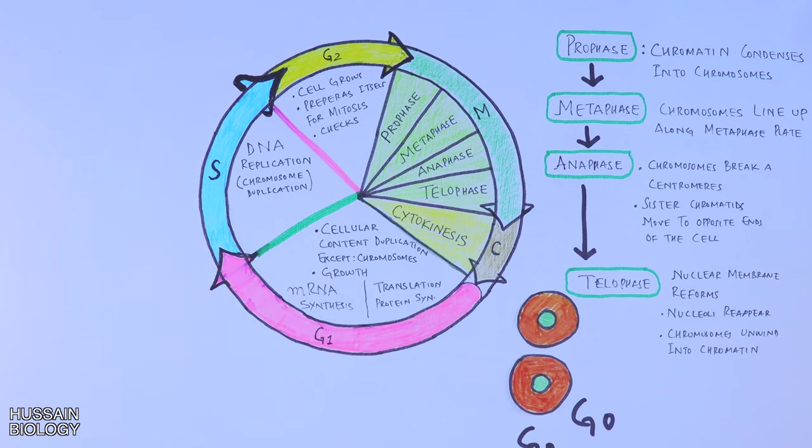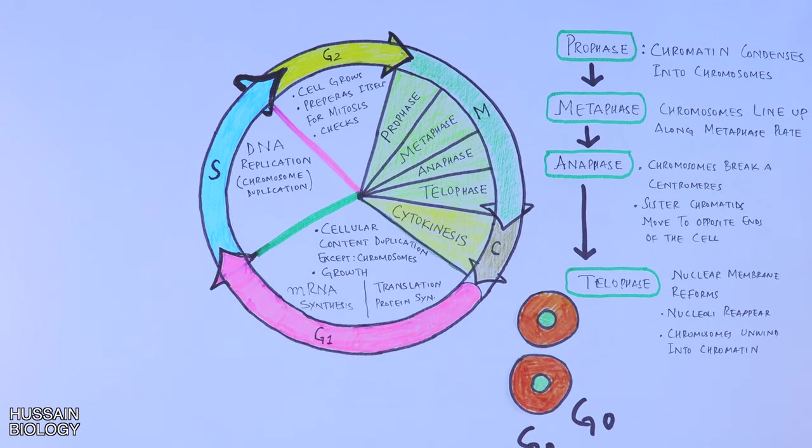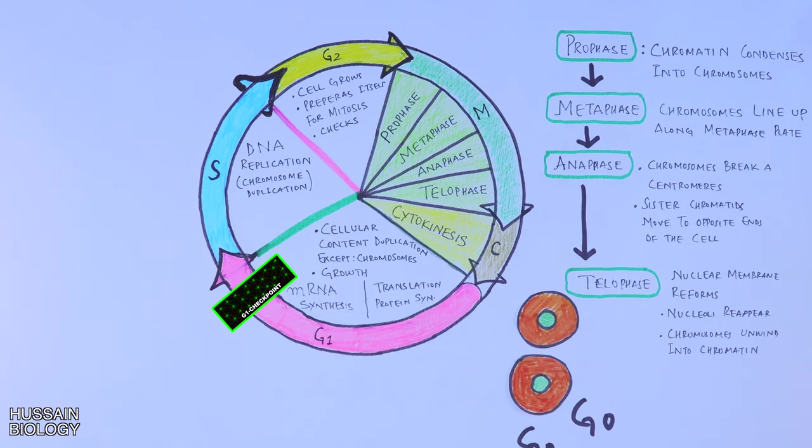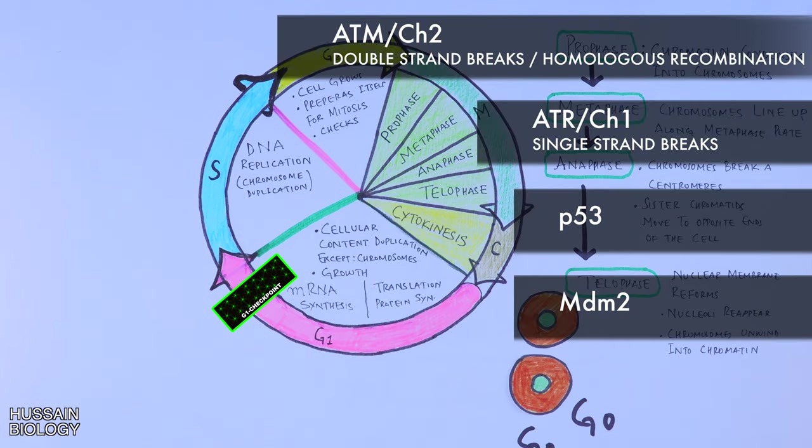This is the cell cycle, but there are regulations and checks to it. First of all, we are going to see the checkpoints at different phases of the cell cycle. The first check occurs in the G1 phase at the restriction point, as shown in the diagram. This check is regulated by the ATR, ATM, p53, and MDM2 proteins. It checks for DNA errors and breaks.